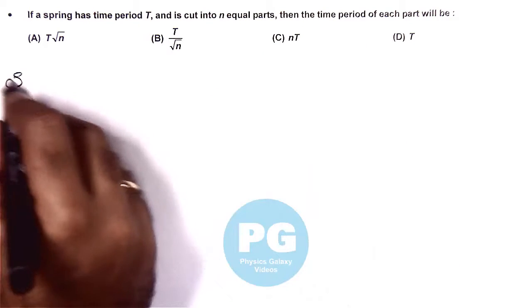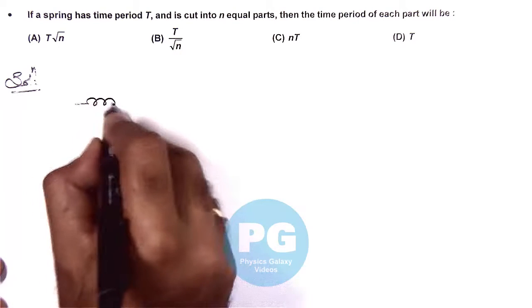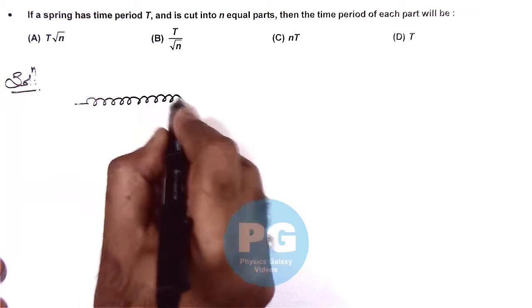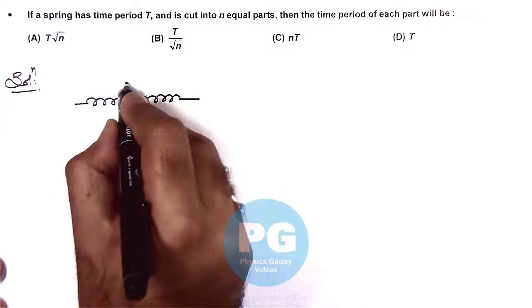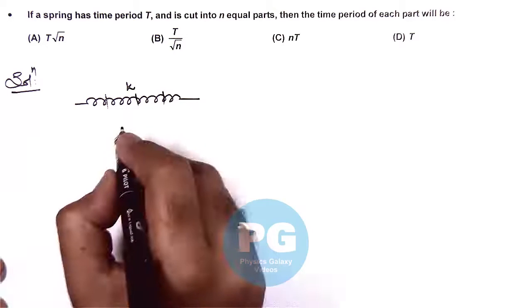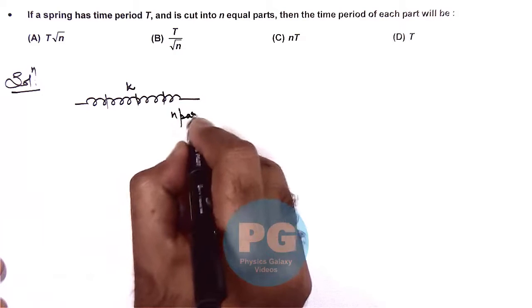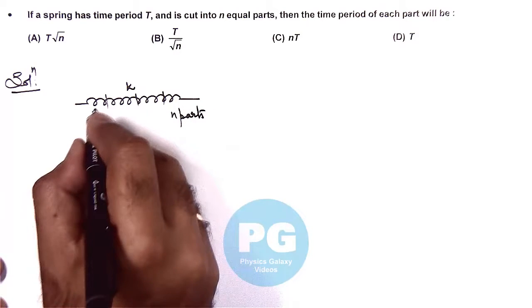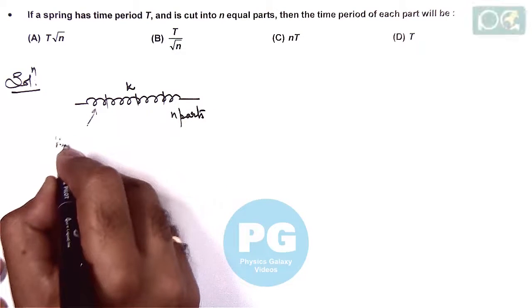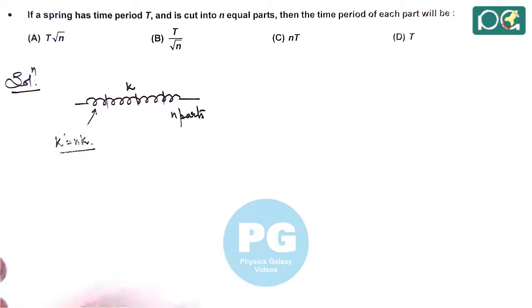This concept we already studied in theory. If we are given a spring having force constant k and it is cut into n identical parts, then each part will have a force constant k dash equal to nk.